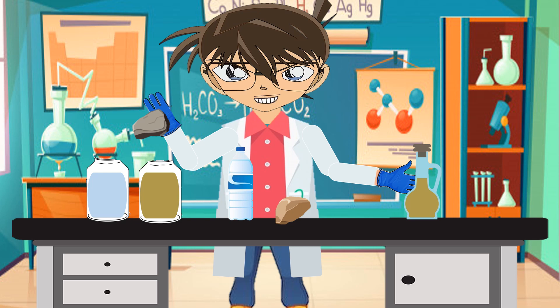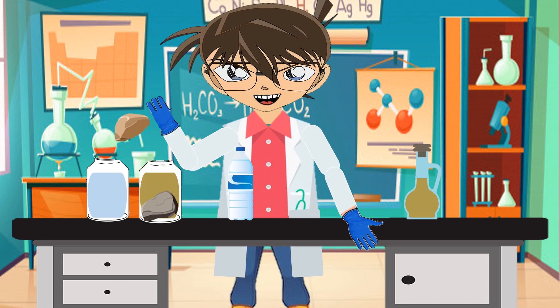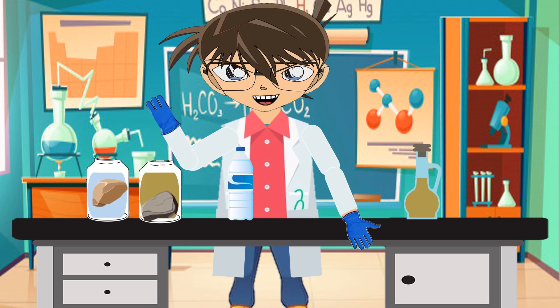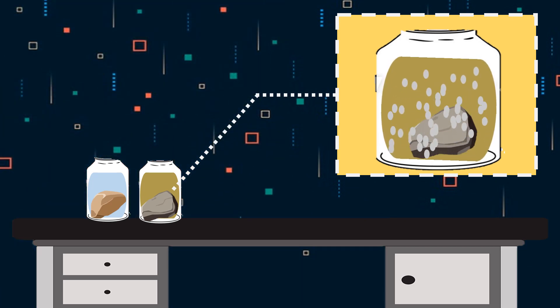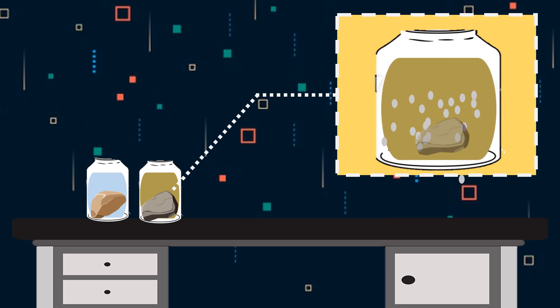The last step — we need to place one piece of limestone in the jar with vinegar. As you can see, acid may dissolve parts of some calcium-based rocks as it releases carbon dioxide gas. Now we will let it sit there for a day.